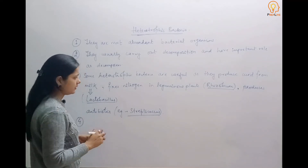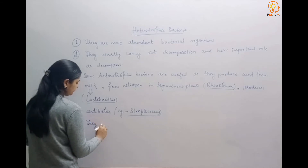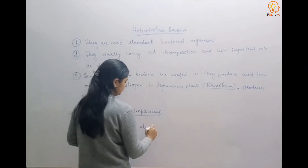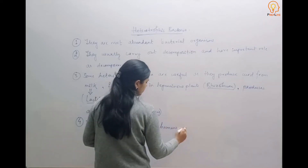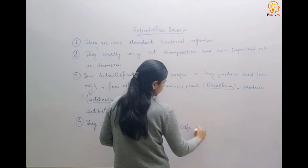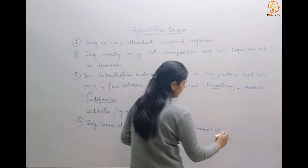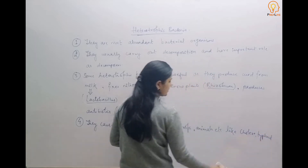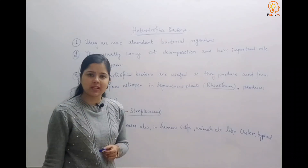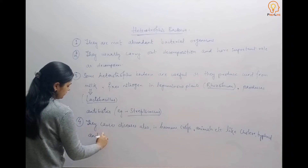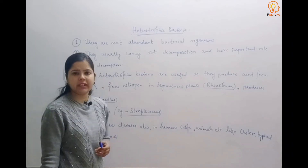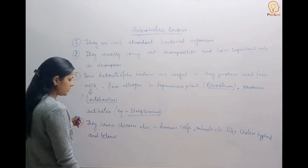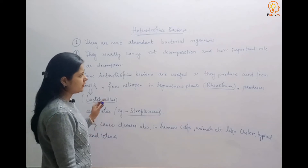Apart from acting in a useful manner, some heterotrophic bacteria are also responsible for causing diseases and have pathogenic effects. They cause diseases in humans, crops, and animals — like cholera, typhoid (caused by Salmonella typhi), and tetanus (caused by Clostridium tetani bacteria).